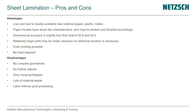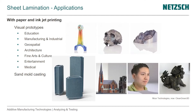So only visual prototypes. We have lots of material waste, which can be recycled — paper — and the post-processing is labor-intense. Here are some examples of applications with paper and inkjet printing: visual prototypes for education, such as that skull, for archaeological demonstrations, and manufacturing and industrial applications.